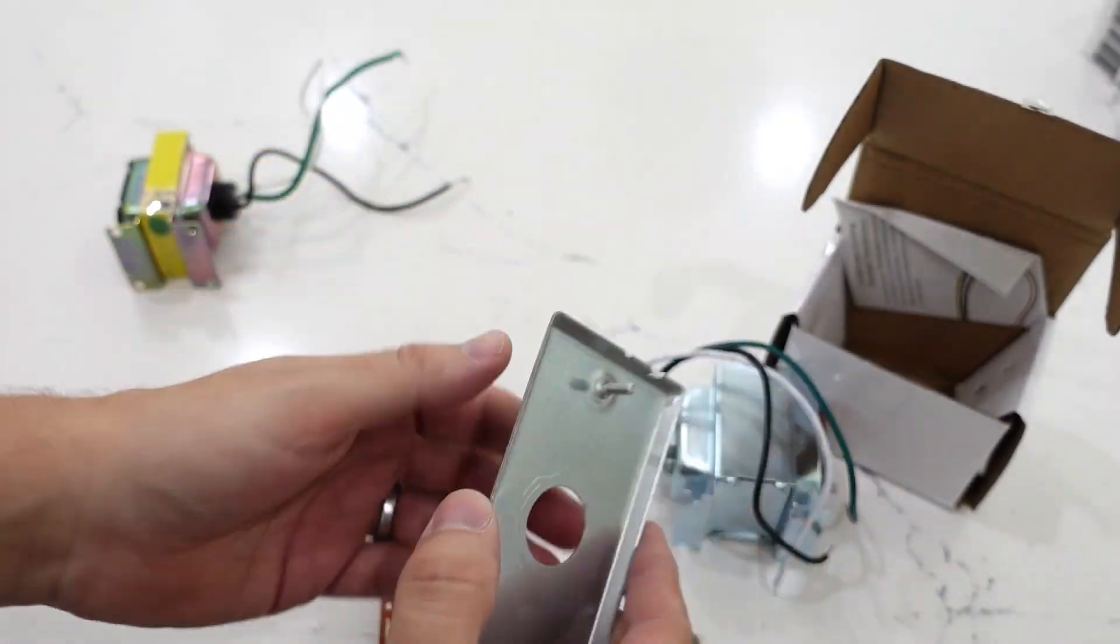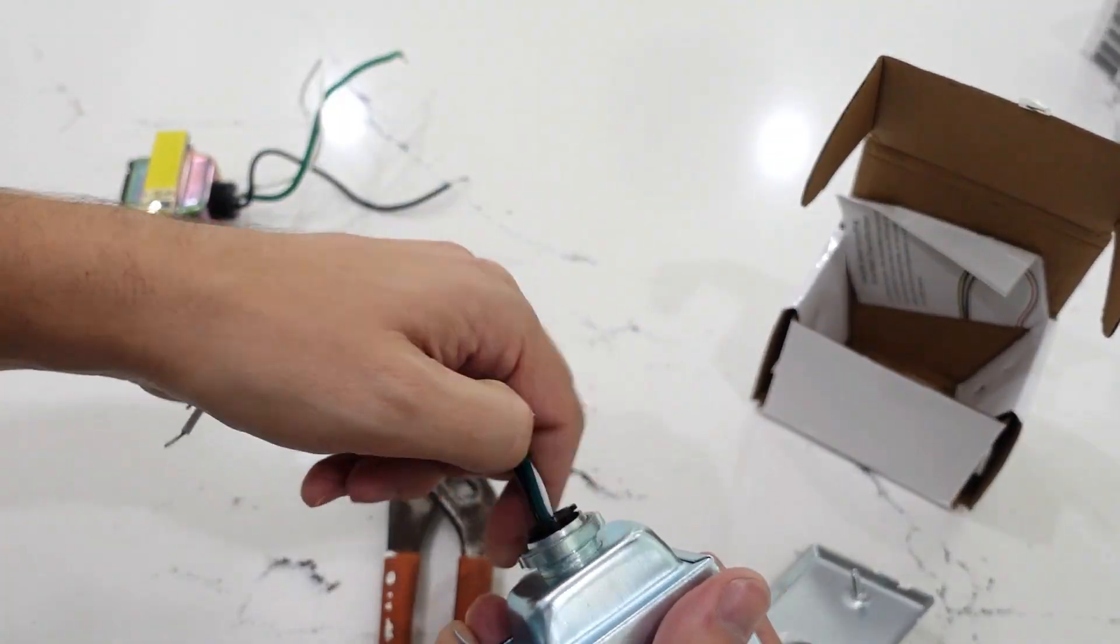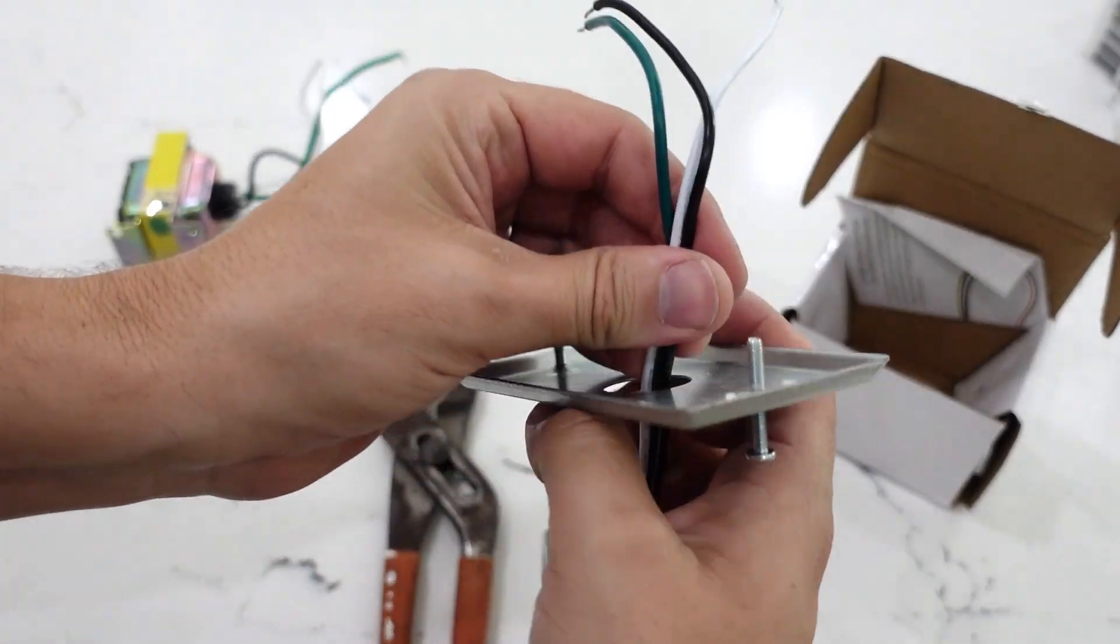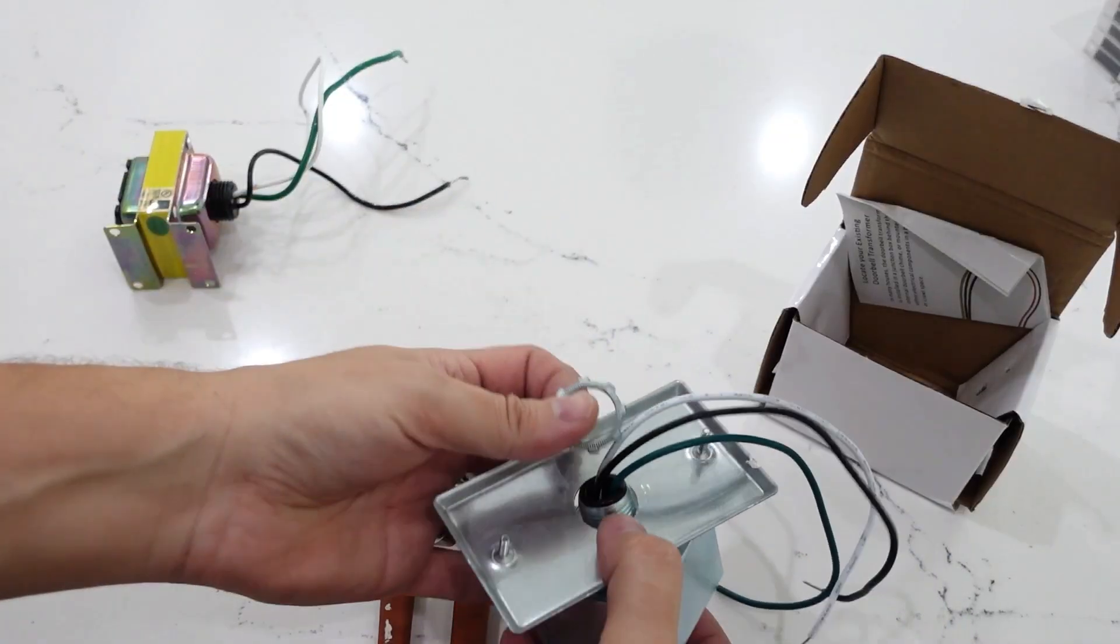So here's your plate. This one, same thing. Remove the nut. Thread the wires through like this. Put the nut back on.